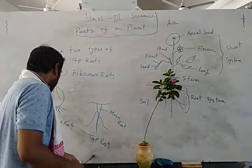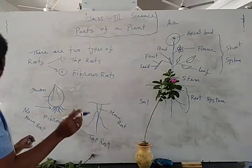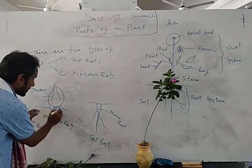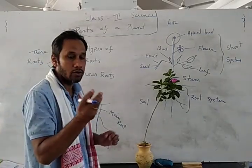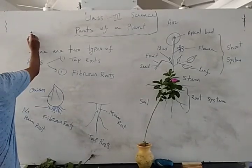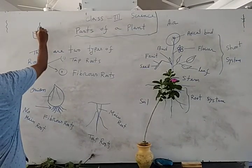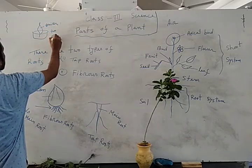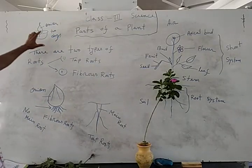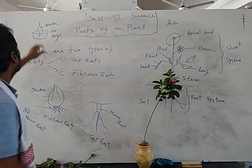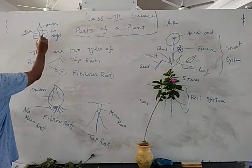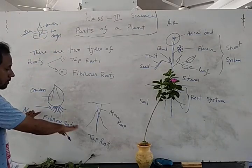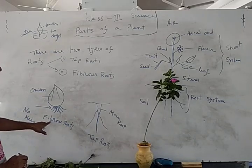You can take one onion and keep it in water for one or two days, then you will see some white roots are developed — all equal in size. This type of root system is called the fibrous root system.